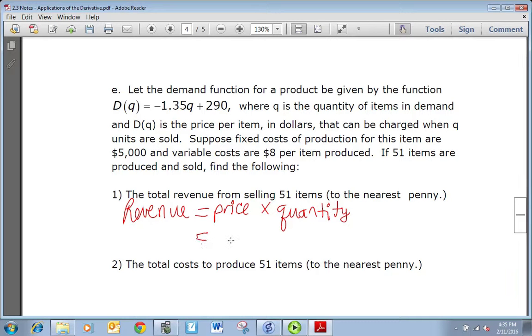The quantity of items sold is given as D(q) in the demand function, and the price - so that is going to be D(51) because demand and price are often thought of as the same thing, and quantity is 51. So we have to plug 51 into the D(q) equation, which is going to be -1.35 times 51 plus 290, so that whole quantity is multiplied by 51. And if we do that correctly we should come up with 11,278.65.